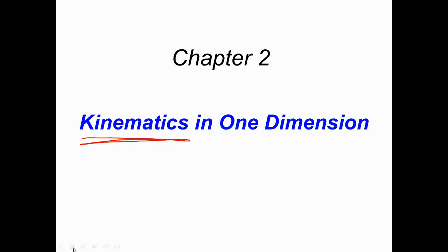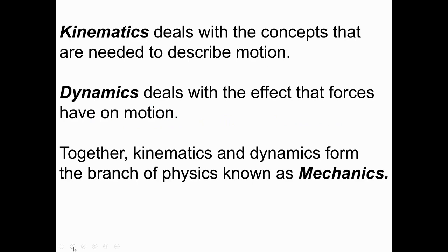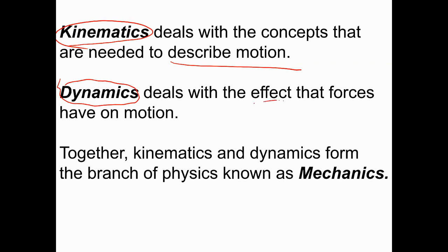Our next step is: what exactly is kinematics? Kinematics is dealing with describing motion — it's our way of actually describing what is going on with the motion of an object. Later on, we're going to get into the concept of dynamics, where we try to figure out the effect of forces — what causes motion. So kinematics is just describing it, and later we talk about what causes motion with dynamics. This whole group is known as mechanics.